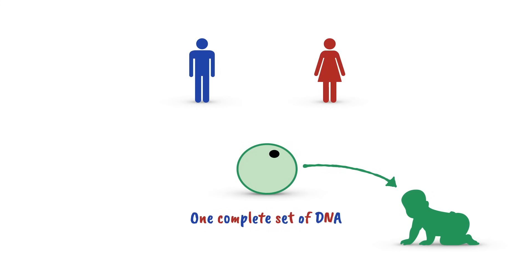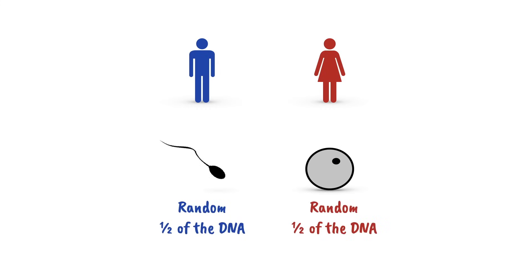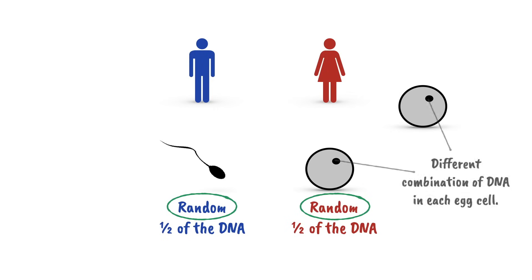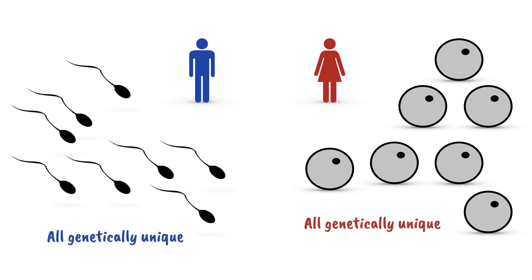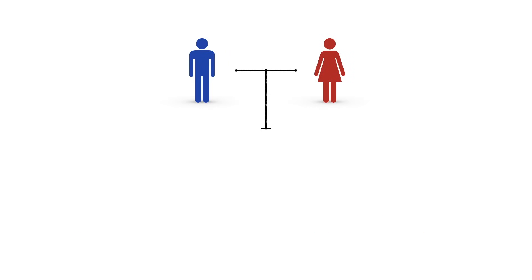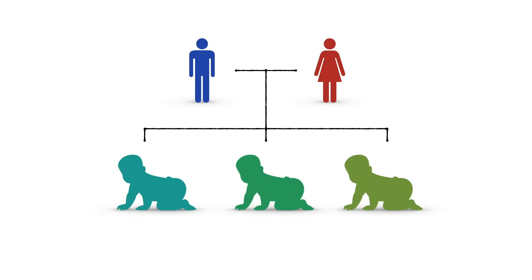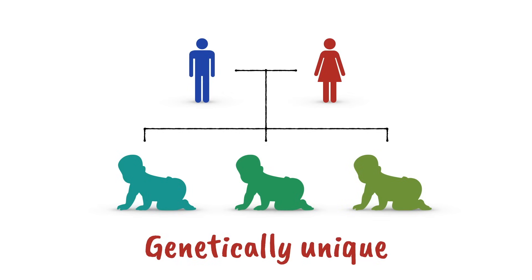Exactly which bits of the DNA make up the half portion within each gamete is quite random. If we compare the DNA in two egg cells from the same female, they would each have a different combination of DNA. No two egg cells provided by one female contain the same DNA. No two sperm cells provided by one male contain the same DNA. Each gamete is genetically unique. So if the same two parents have more than one child, each one will be genetically unique. There is zero possibility that two separate instances of fertilization will produce two children that are genetically identical.